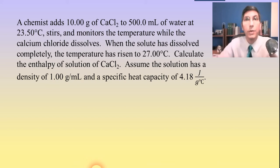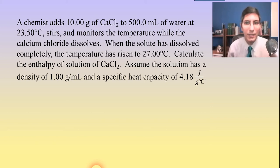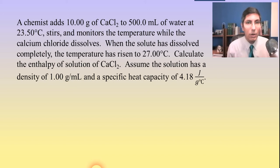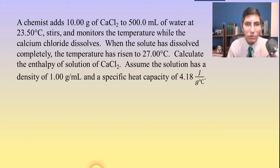Hi there, I'm Jeremy Krug and this is another chemistry video. We are continuing our journey through thermodynamics and the first law of thermodynamics, which is basically thermochemistry. In the last video, we learned about Q equals mc delta T and how we can use that to find how much energy is being transferred between one system and another. In this video, we're going to learn how to take Q equals mc delta T and actually calculate the delta H, the change in enthalpy for a chemical reaction or a chemical process. So let's get started.